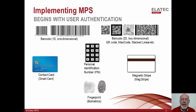Implementing MPS begins with identifying the individual who will initiate a print job, which is typically done with some sort of authentication at the printer. Jobs belonging to that individual can then be released for printing. Most business clients provide their employees with some form of identification or employee badge. These badges can be implemented with a number of different technologies as shown on this slide. Let's spend a moment reviewing some of the more popular technologies.